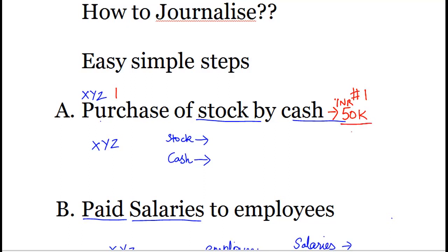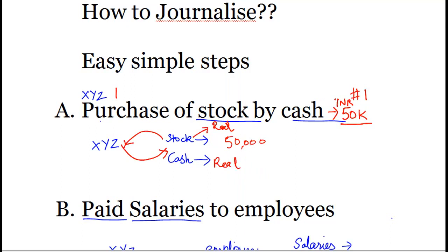The two parties involved in this transaction are the two items involved: one is stock and the other is cash. The company has paid cash and received stock for 50,000. So stock is a real account, and cash is again a real account.